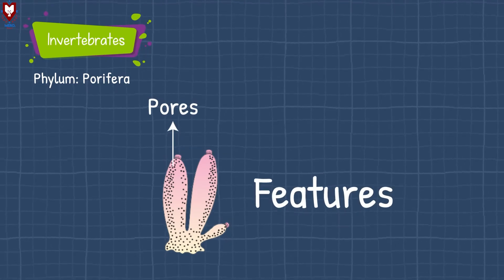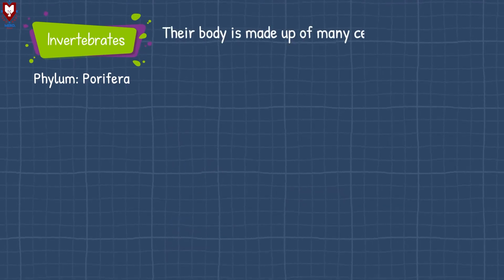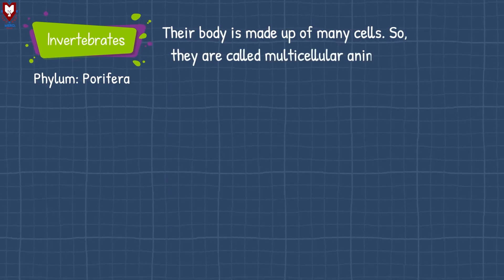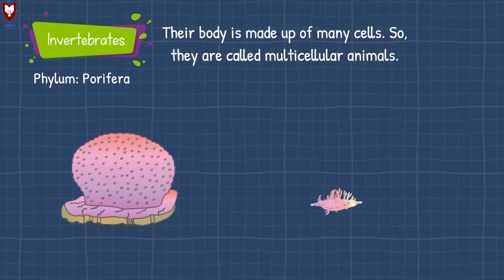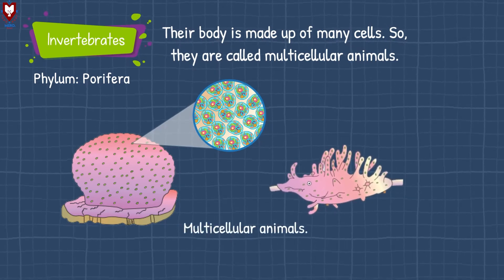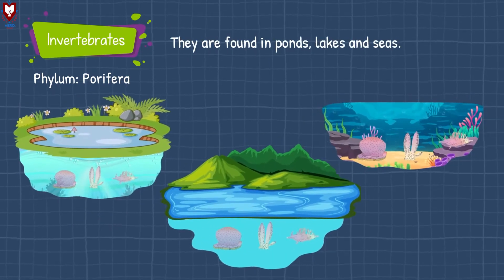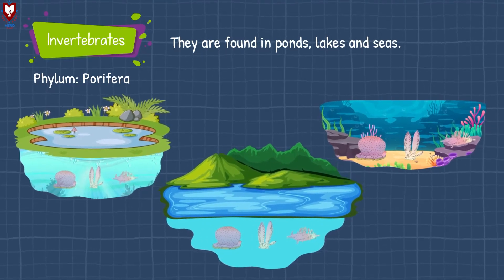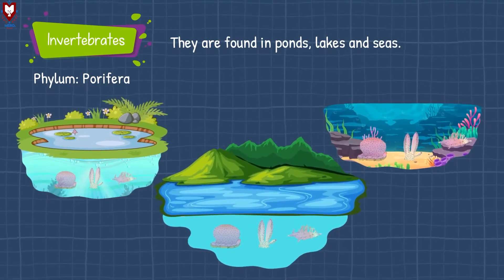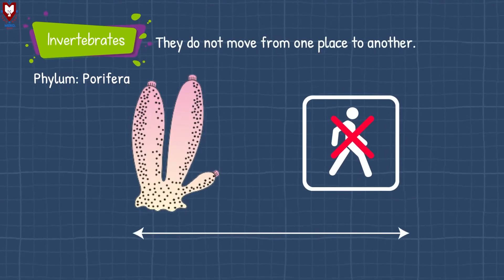Another feature of porifera animals is that their body is made up of many cells, so they are multicellular animals. These animals are found in ponds, lakes, and seas. They do not move from one place to another — they are fixed in place.